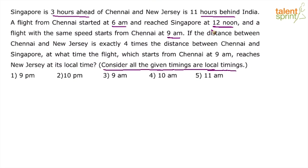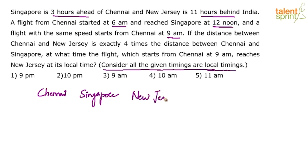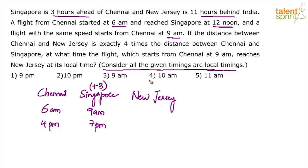If you are clear with that, 3 hours ahead is very simple — just add. The problem comes with 11 hours behind: first it is a subtraction, and second, because it is 11 hours, there can be confusion — will it be 9 am or 11 am? For Singapore, it's plus 3; for New Jersey, it's minus 11. So if it is 6 am in Chennai, subtract 11 hours to get New Jersey local time.